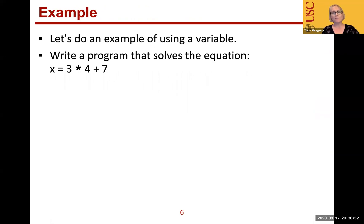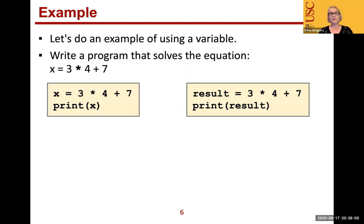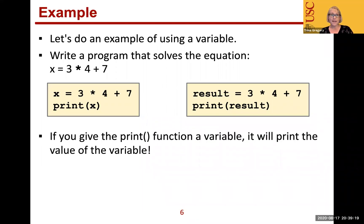Okay, so let's do an example of using a variable. Let's write a program that solves the equation x equals 3 times 4 plus 7. Here's two examples. We just created a variable with the name x, which is okay, that's fine, but sometimes really short variable names aren't great sometimes. So I changed it to result. So result equals 3 times 4 plus 7. And then we're using the print function to print it. And when we take that variable and put it into print, it actually prints the value of that variable. For example, in this case, what is printed is 19. So 3 times 4 is 12, plus 7 is 19.